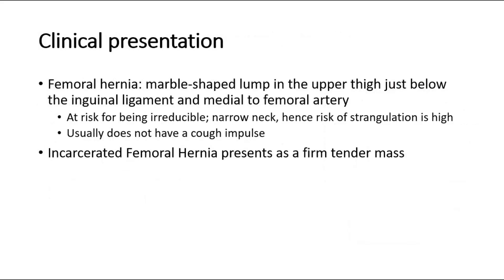For clinical presentation, femoral hernia presents as a marble-shaped lump in the upper thigh, just below the inguinal ligament and medial to the femoral artery. It is at risk of being irreducible, and with its narrow neck, the risk of strangulation is high. It usually does not have a cough impulse. An incarcerated femoral hernia presents as a firm, tender mass.